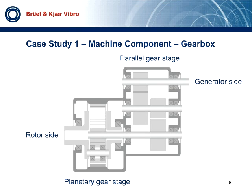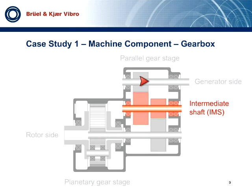In general, much attention is given to the planetary stage due to fault detection complexity and low speed rotation. However, it is also a challenge to detect faults accurately in the helical stages. The three parallel stage shafts are: low speed shaft, intermediate shaft, and high speed shaft. In this webinar, our focus will be on support bearings for the intermediate shaft — from now on I will call it IMS for brevity.